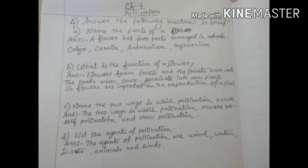Now number D: List the agents of pollination. The agents of pollination are wind, water, insects, animals, and birds.